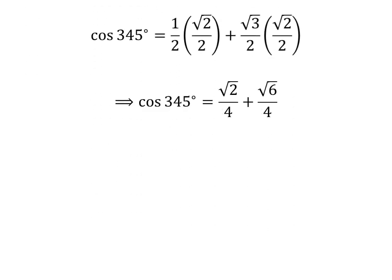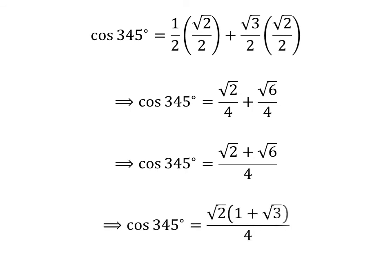Simplification gives us cosine of 345 degrees is equal to square root of 2 upon 4 plus square root of 6 upon 4. Taking out the common factor square root of 2 in the numerator gives us cosine of 345 degrees is equal to square root of 2 times 1 plus square root of 3 upon 4.